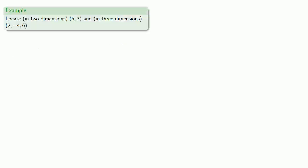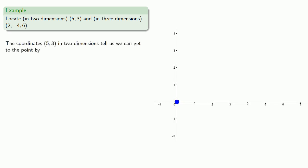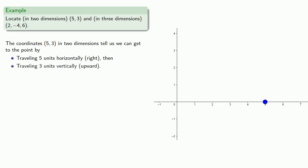So we might try to locate in two dimensions the point (5, 3). The coordinates (5, 3) in two dimensions tell us we can get to the point by traveling five units horizontally to the right, and then traveling three units vertically upward.